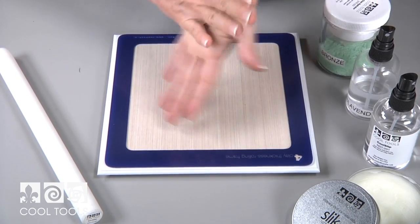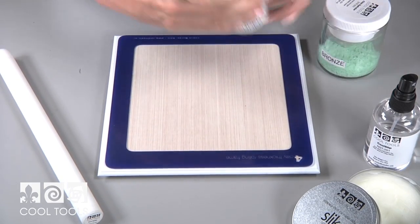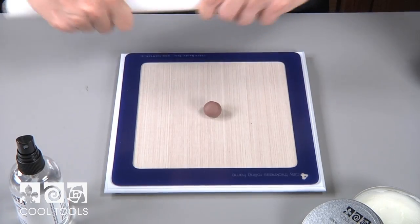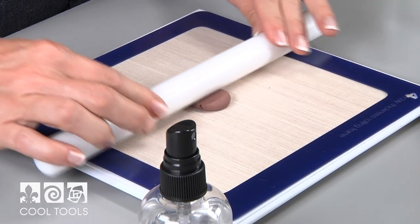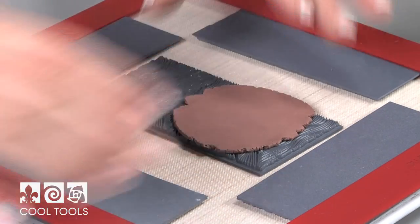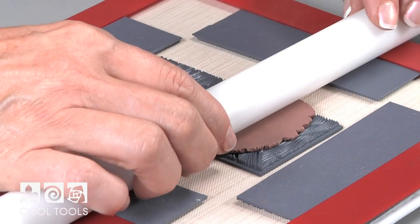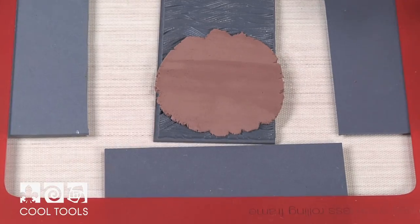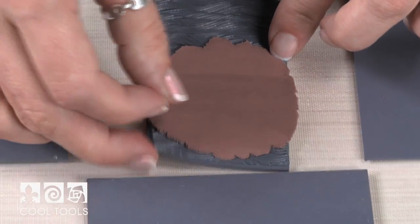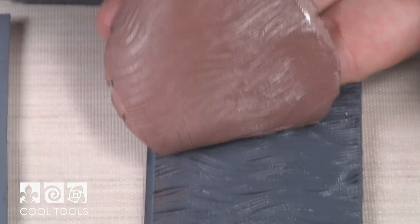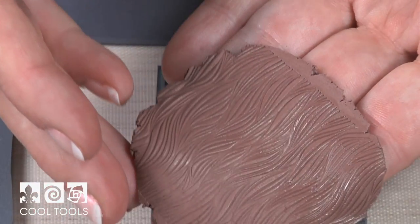Next I'll make the bale for the pendant. Start by spritzing your work surface and roller with the water lavender mixture. Re-roll your clay at four cards thick. Spray with cool slip to keep the clay from sticking. Now roll the clay into the texture this time to three cards thick. The thinner slab will lend itself to a smaller component such as a bale. The bale should measure about one and a quarter inches long and about a quarter inch wide.